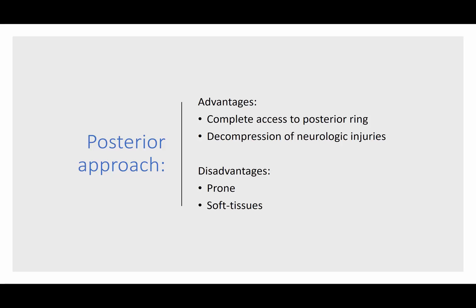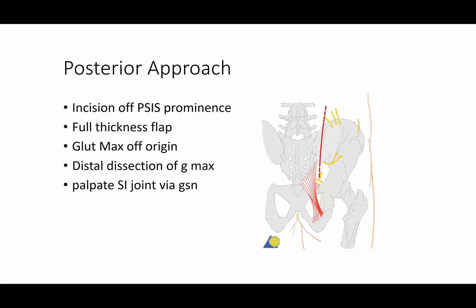Let's talk about open approaches and other techniques beyond iliosacral screws. An open posterior approach gives you complete access to the posterior ring and allows decompression of neurologic injuries. The disadvantages are that you have to be prone, and the soft tissues are not forgiving — there's not great soft tissue coverage over the sacrum posteriorly. The incision is made off the PSIS prominence, maintaining a full-thickness flap, elevating the gluteus maximus off its origin, and potentially up to the gluteus medius. You can palpate the SI joint through the greater sciatic notch if necessary.